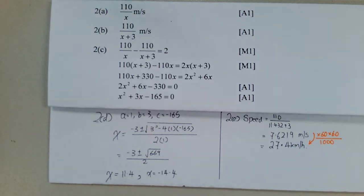In 2e, find the speed in kilometers per hour of the cyclist. So speed, distance divided by time. I do not use negative 14.4 because there is no way it can be negative. The speed is not negative.